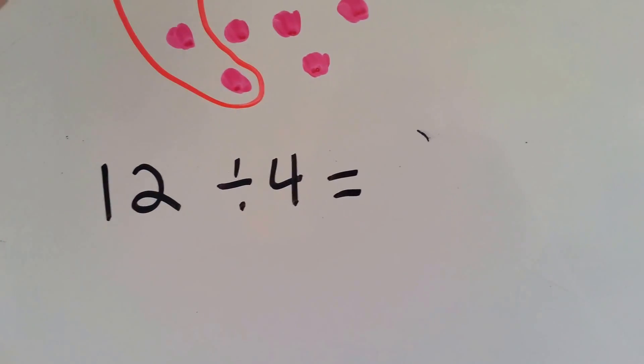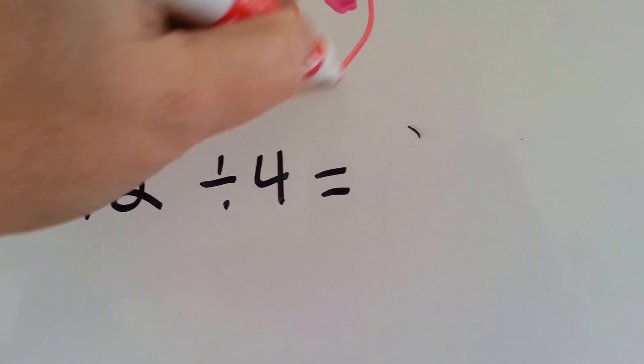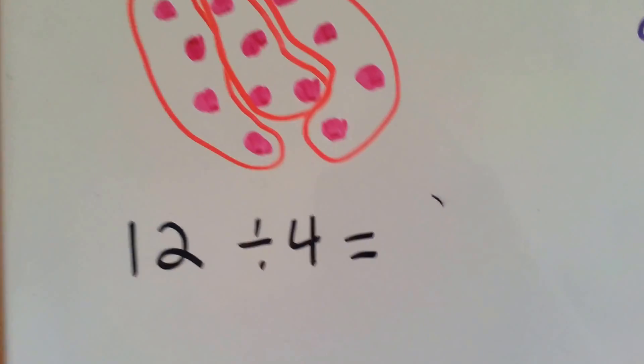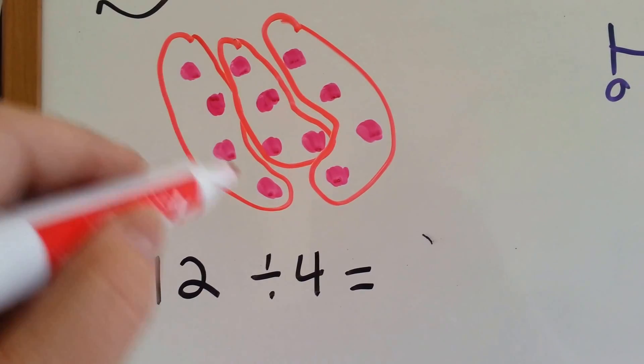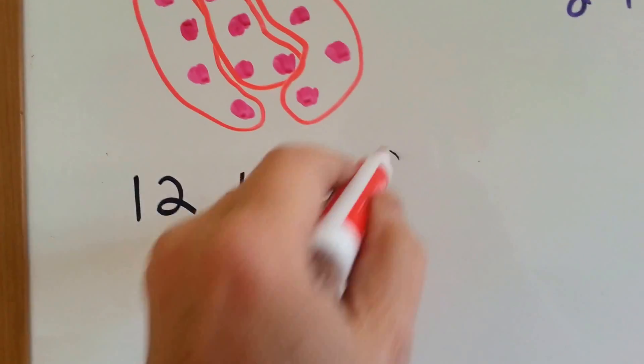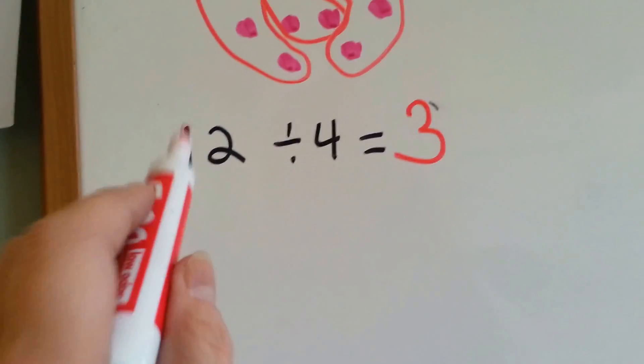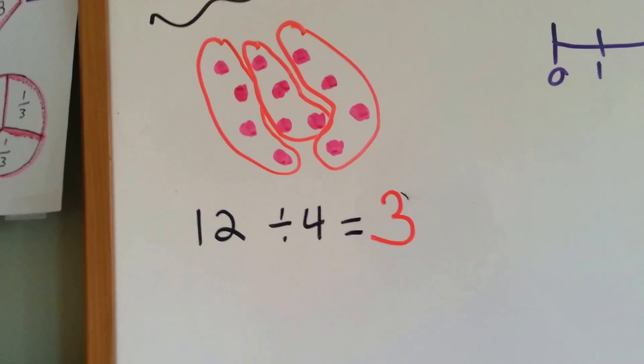4 dots, 4 dots, and 4 dots. Each group has 4 dots. How many groups did I make? I made 3. 1, 2, 3. So 12 divided by 4 equals 3.